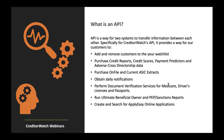Other capabilities include purchasing on-file and current ASIC extracts. Document verification services allow us to check Medicare cards, driver's licences, passports, and other documents. We've also launched our Ultimate Beneficial Owner service as part of AML/CTF regulations, providing PEP — politically exposed persons — reports, sanctions, and adverse media checks. And we can create and search applications from our online Apply Easy application.